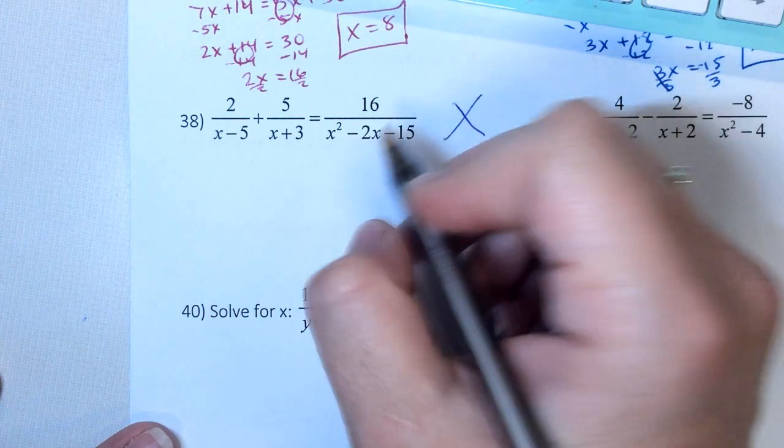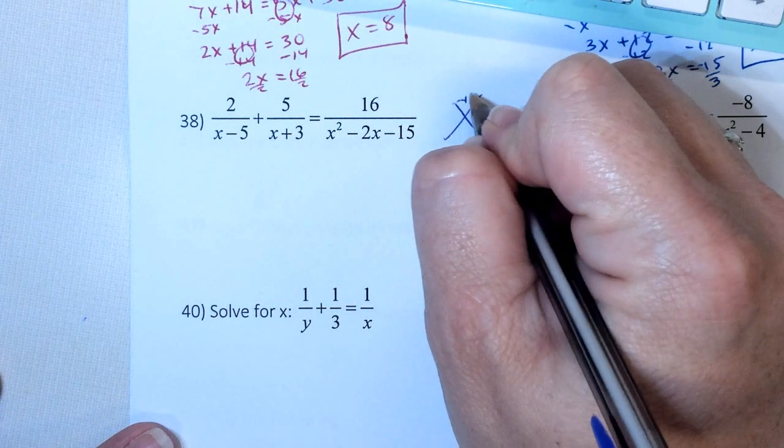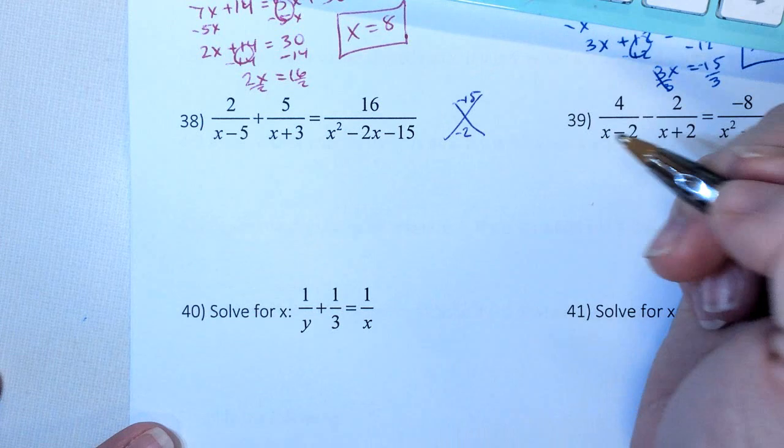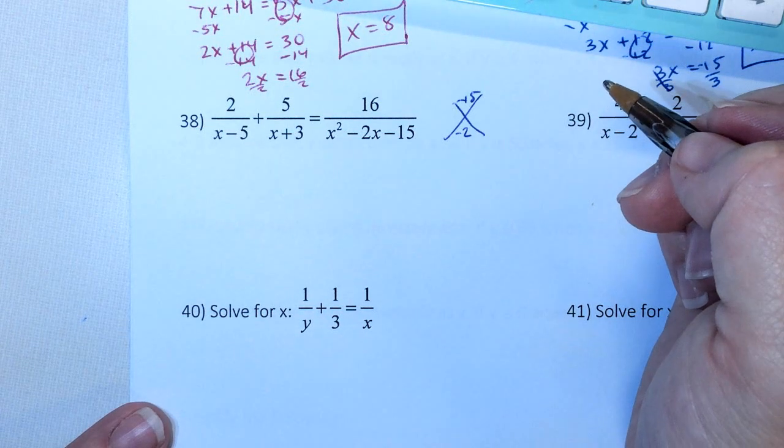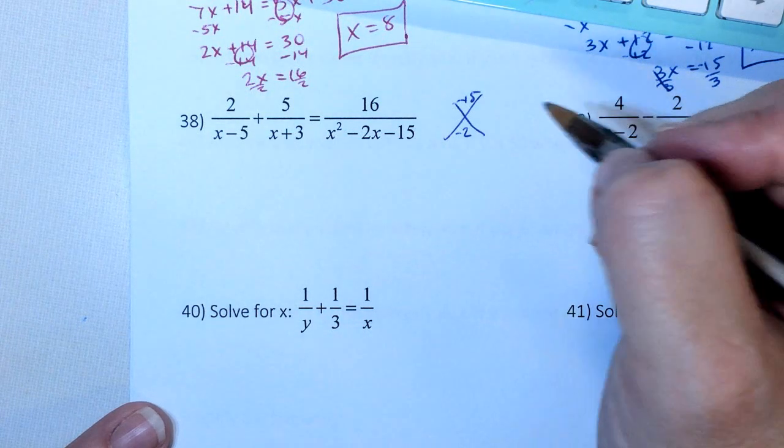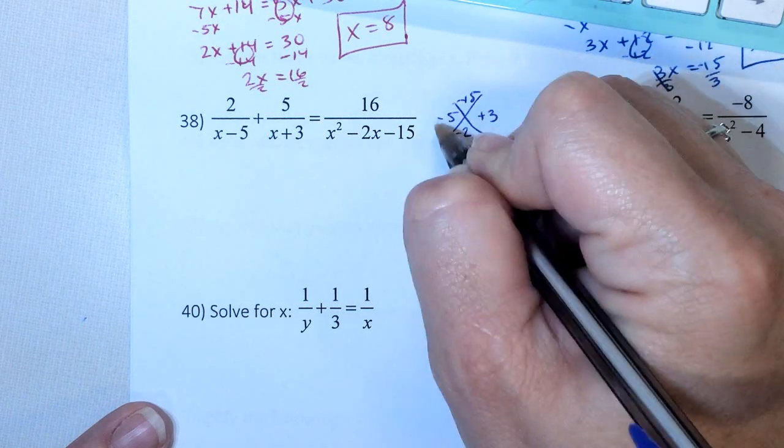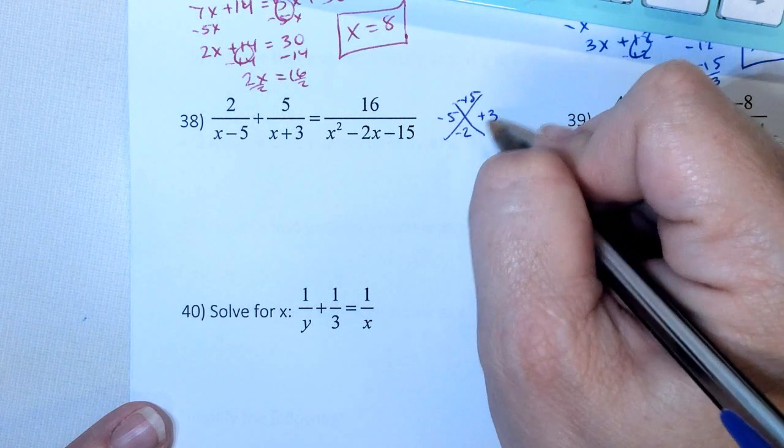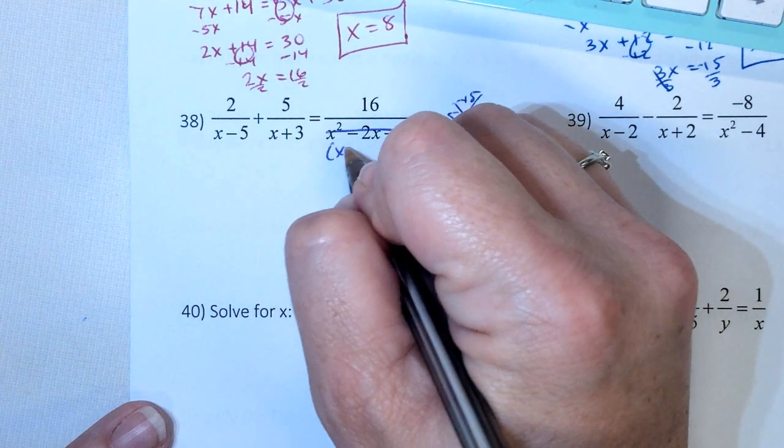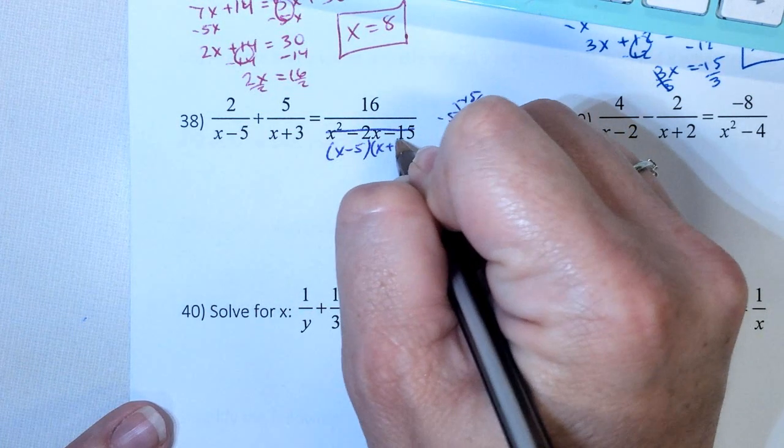So we have to factor the bottom. A times C is negative 15, B is negative 2. Now I'm saying A is 1, so we don't have to worry about doing the box. So it's going to be negative 5, positive 3. Negative 5 times 3 is negative 15. Negative 5 plus 3 is negative 2. So this became x minus 5, x plus 3.